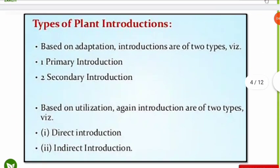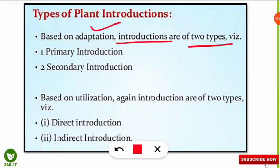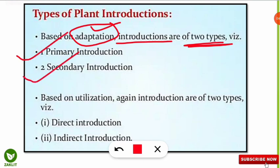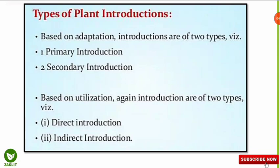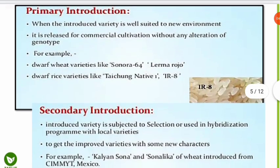Now we will know what are the types of plant introduction. Based on adaptation, introductions are of two types: primary introduction and secondary introduction. Based on utilization, there are again two types: direct introduction and indirect introduction. We will now discuss primary and secondary introduction one by one.